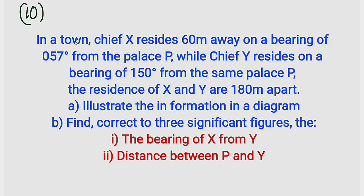The question reads: in a town, Chief X resides 60 meters away on the bearing of 057 degrees from a palace P, while Chief Y resides on the bearing of 150 degrees from the same palace P. The residences of X and Y are 150 meters apart. Part A: illustrate the information in a diagram. Part B: find, correct to three significant figures, the bearing of X from Y and the distance between P and Y.